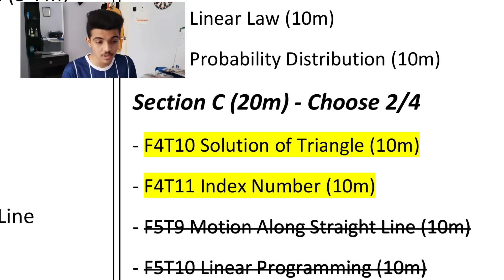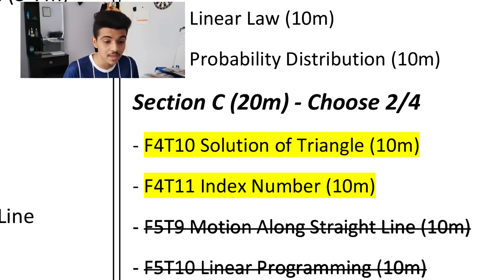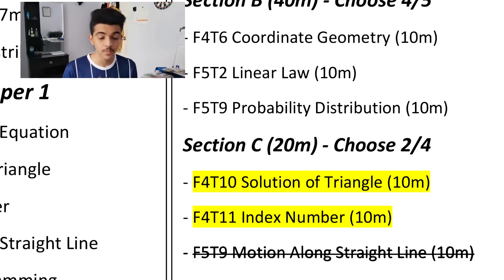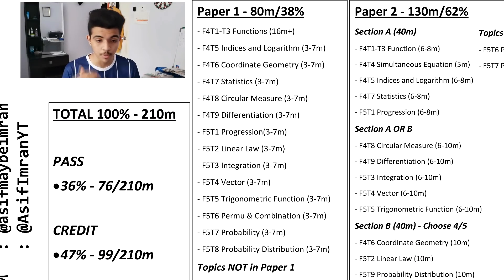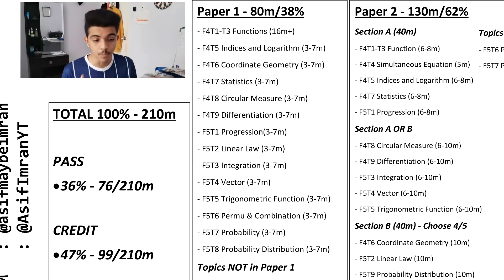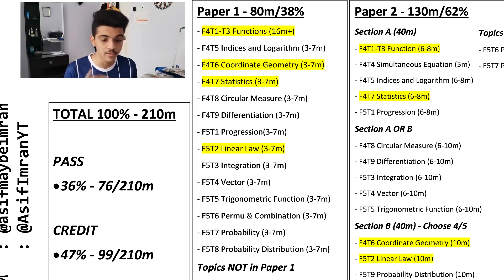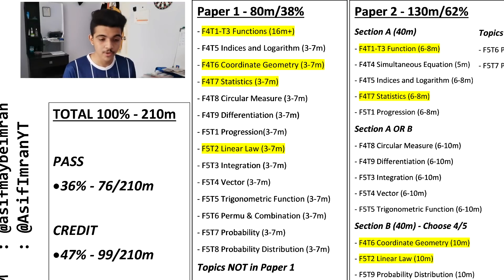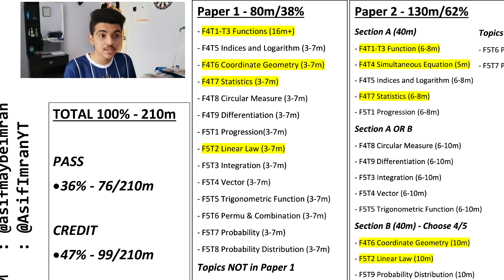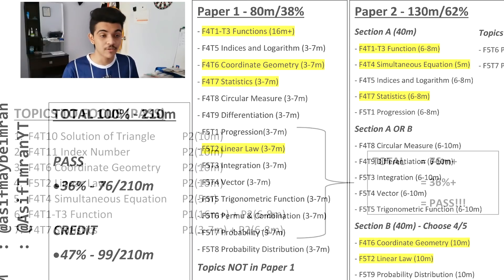First things first, I want you to focus on Solution of Triangle and Index Number because these two questions are guaranteed and are the easiest among the four Section C choices. Then we're going to look at the Section B topics which appear in both Paper 1 and Paper 2, because these topics carry more marks overall — such as coordinate geometry, linear law, function, and statistics. We're also going to add simultaneous equation from Paper 2 because it's quite easy. These are literally all the topics you should focus on to pass AdMaths.